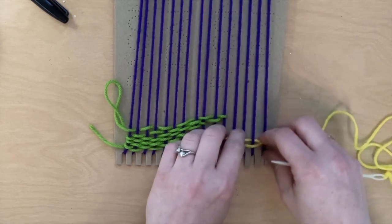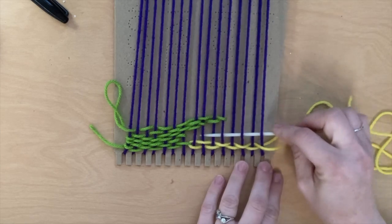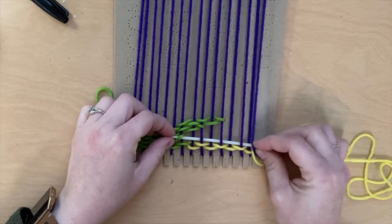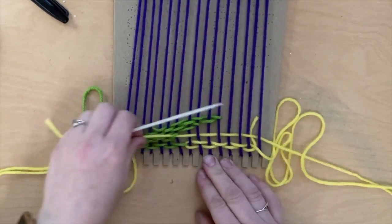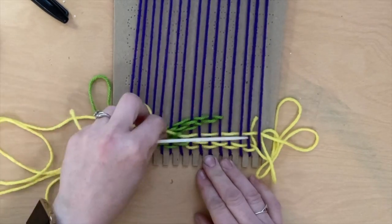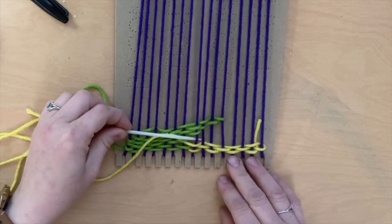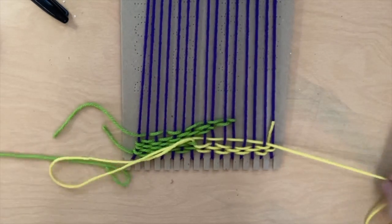Don't forget to squish it down, then continue weaving all the way across until you reach that first color. Go through the loop, pull all the way to the end, and continue this until you have gone through the loops of each one of those rows.